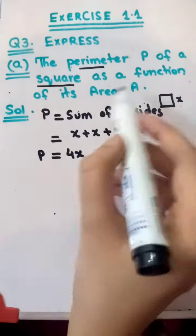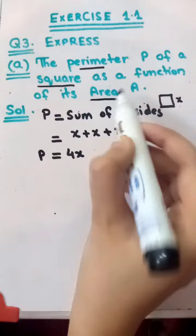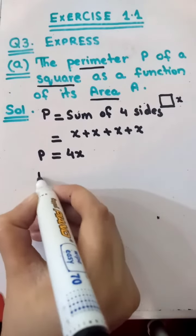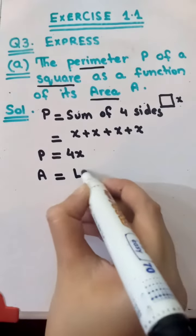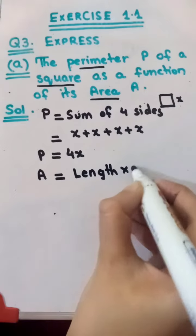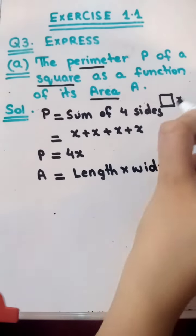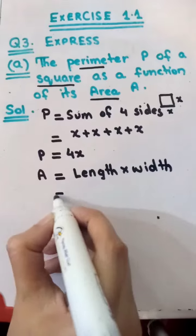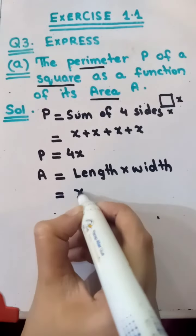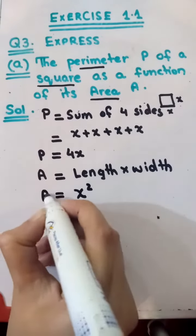It is perimeter. Next, the question tells us about area. Area of a square equals length times width. Here length is x and width is also x, so x multiply x is x squared. It is our area.